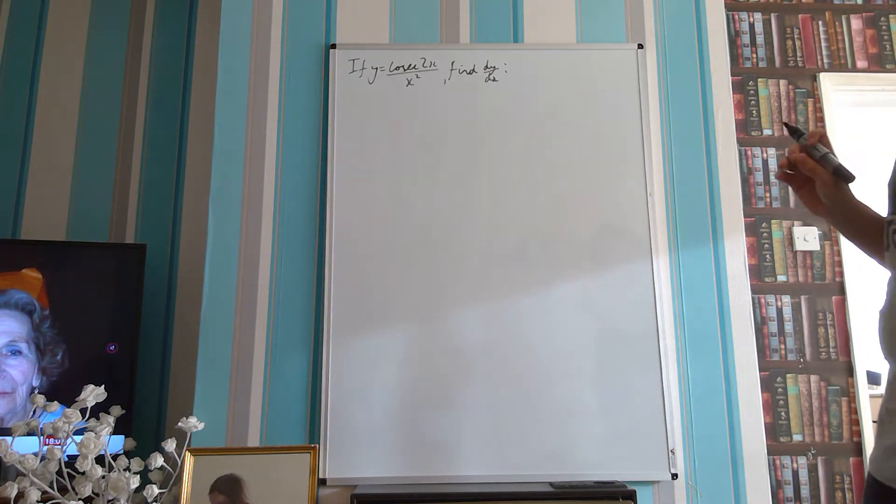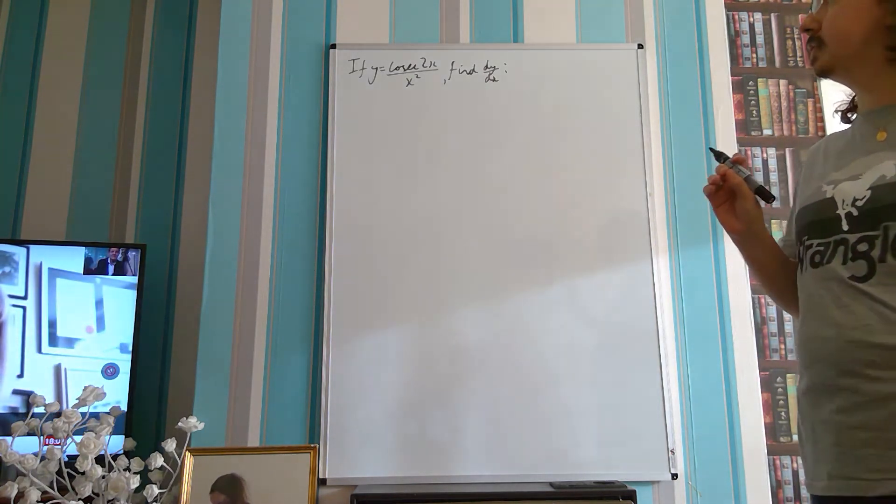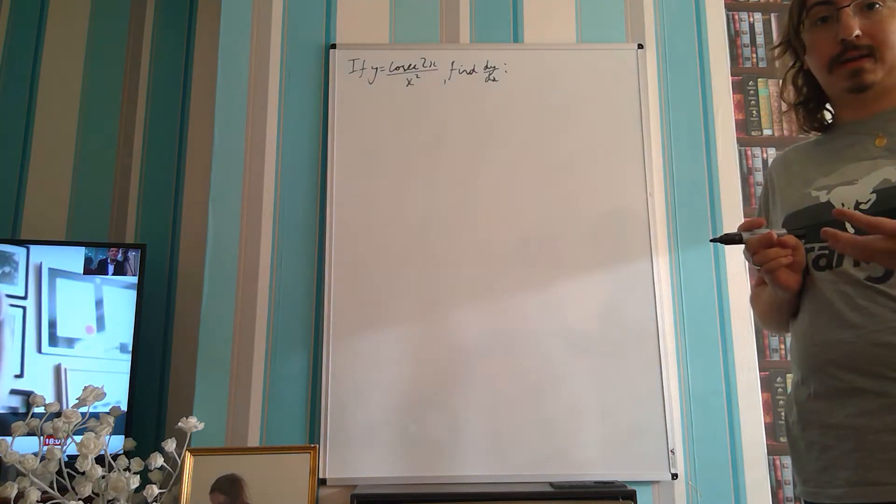Okay, so if y is equal to cosec 2x over x squared, find dy by dx.